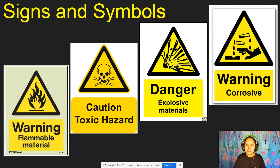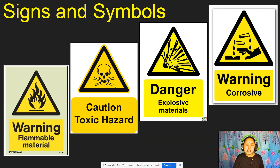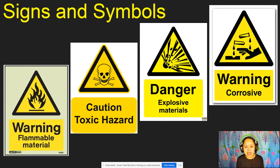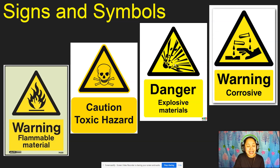How about the symbol with a skull or bones? That represents a toxic hazard — meaning if it is eaten or drunk by people, it can cause death. Next is the symbol for explosive materials — when you see a sign that looks like something exploding, that means the material can explode.